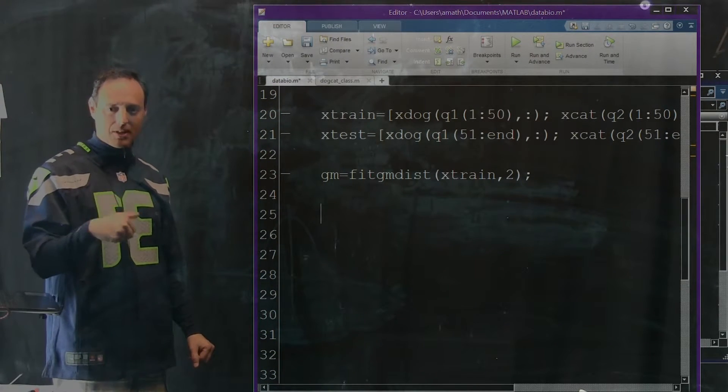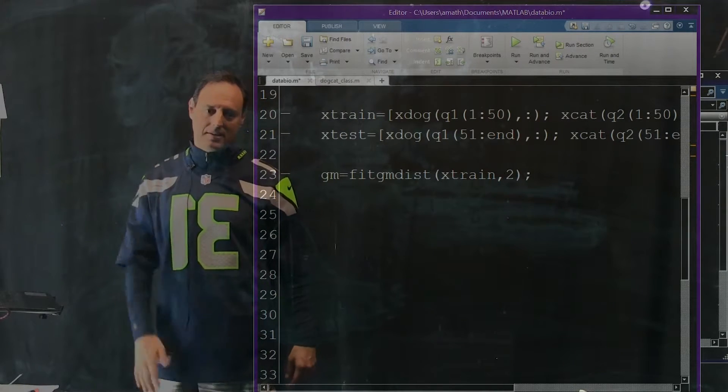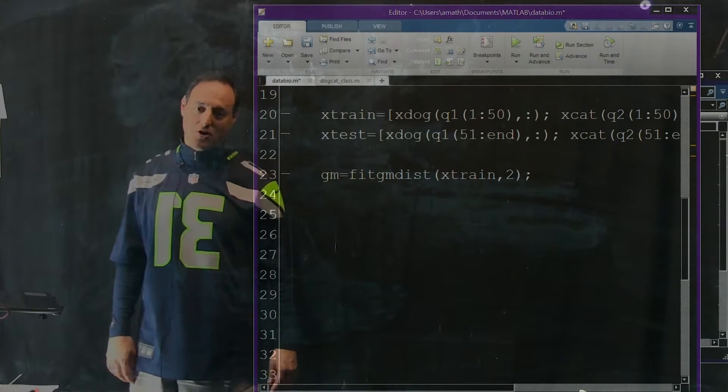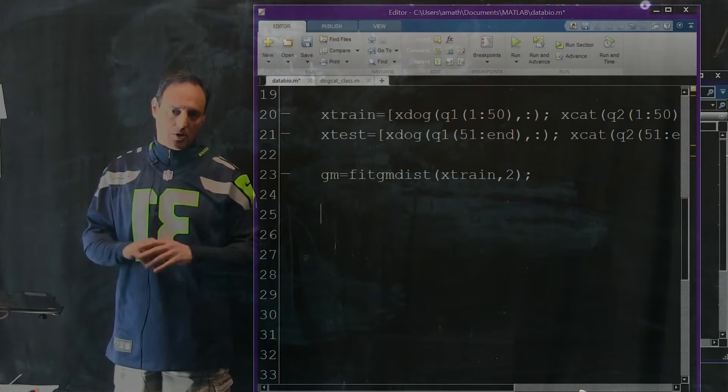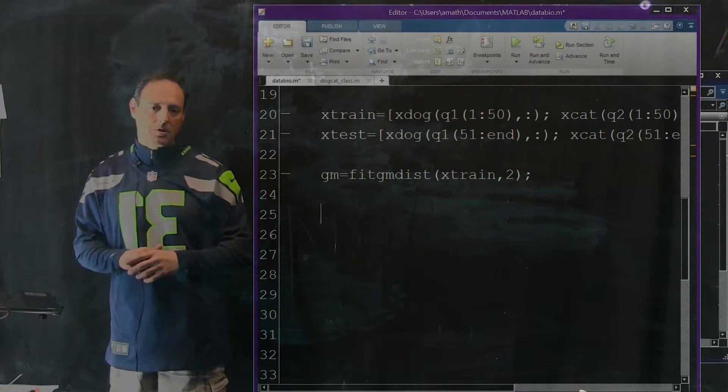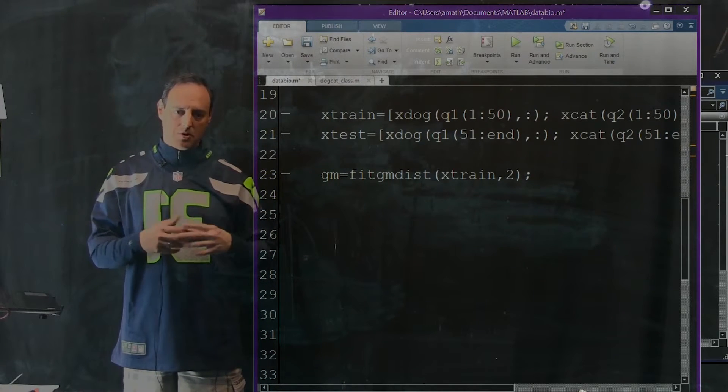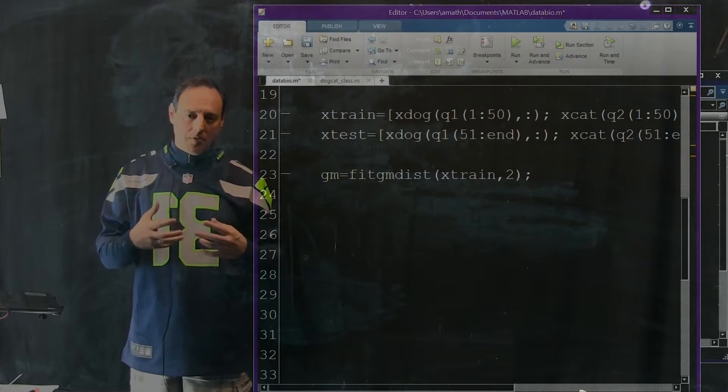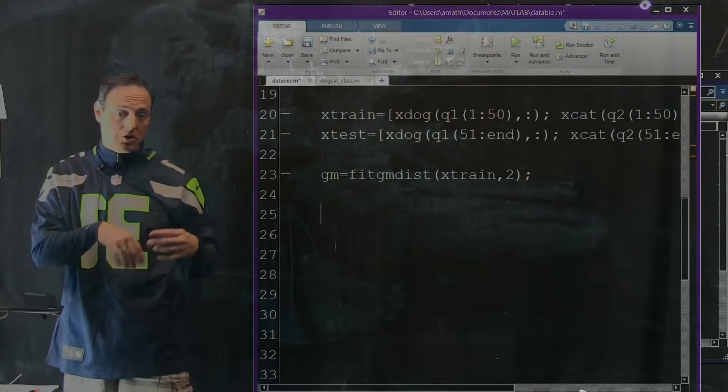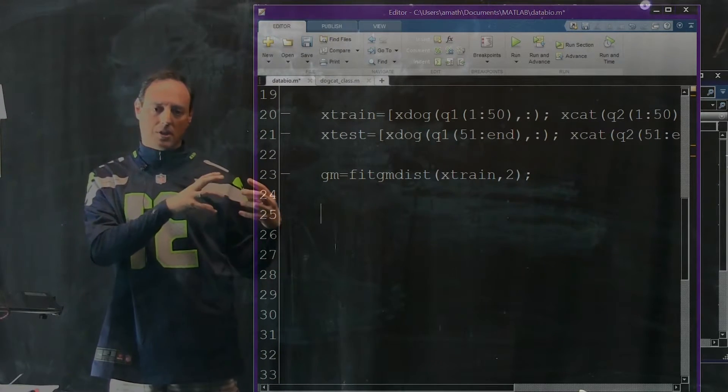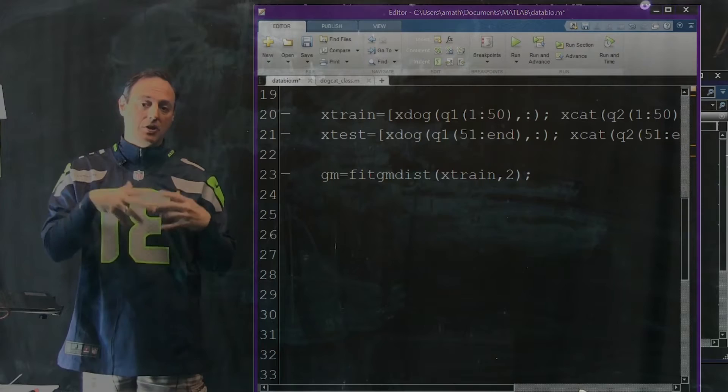So you have to pick that two. And that's where it becomes interesting in the data analysis part, because here we know ahead of time it should be two. But in general, how do you pick that? That's a good question to ask, and it's a hard one to answer, actually. But sometimes you can do it fairly simply. And at least for the data we're doing, it's not that hard. Now what this is going to return to us, in this variable gm, what comes out of this fitgmdist is the parameterization of those Gaussian distributions that come out. Now to be able to use it, you can just take that gm and save it. It's sort of an object now that you can use.